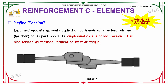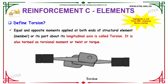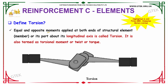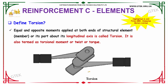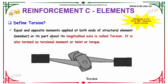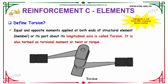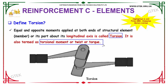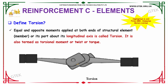Our next question is: define torsion. Torsion is nothing but equal and opposite moments applied at both ends of a structural element or its part about the longitudinal axis. It is also termed as torsional moment, twist, or torque.